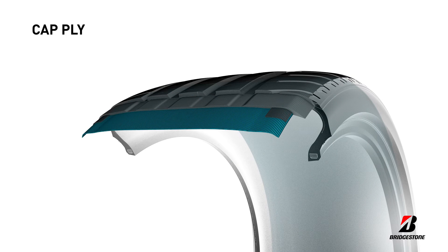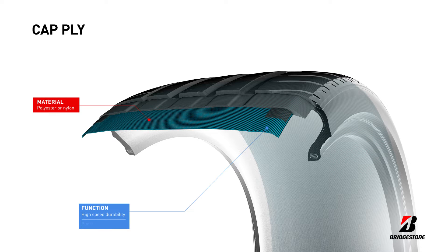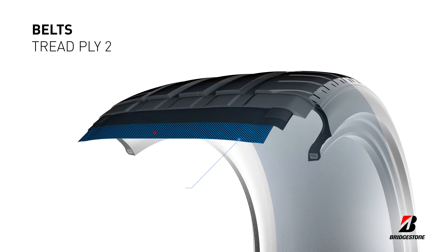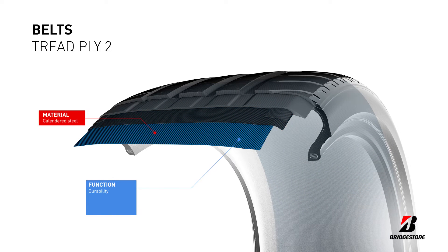The cap ply is very similar to the cap strip in terms of material and function. The only differences are its shape and position. Similar to the cap ply, the belts also increase durability and puncture resistance, plus they improve handling. There are two belts situated at opposite angles.